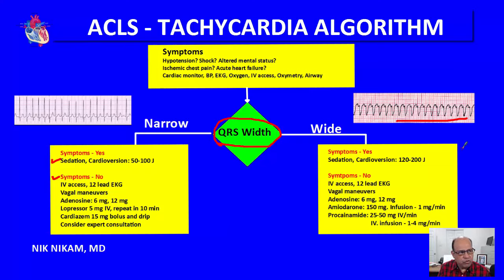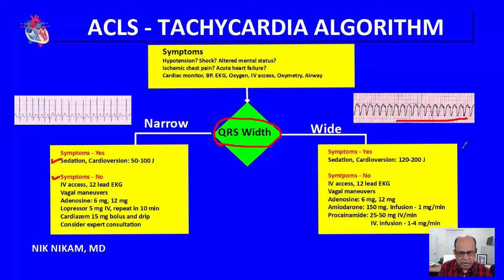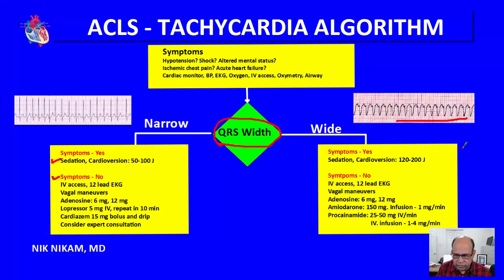If the patient has no symptoms but has sustained wide QRS tachycardia and is stable, we have time to get IV access, analyze the 12-lead ECG, and attempt a vagal maneuver to slow the rate and look for identifiable P waves. This can give a clue that you may be dealing with a supraventricular rhythm with aberration. Based on P wave morphology, if it's atrial flutter or PAT, you may use adenosine 6 to 12 mg IV bolus followed by 20 ml saline flush.